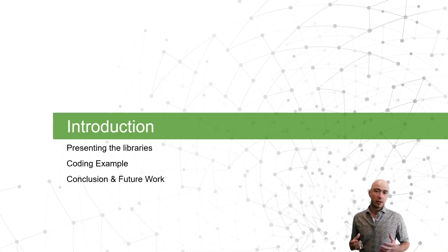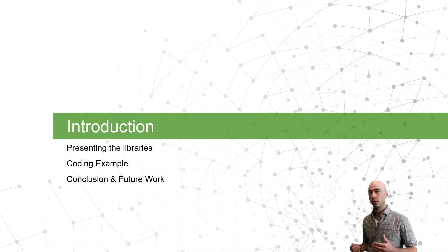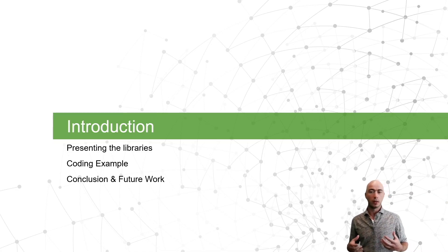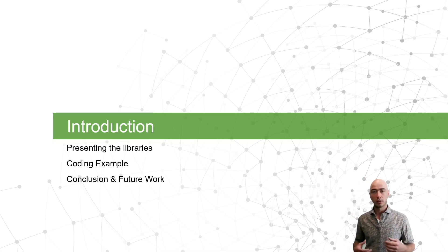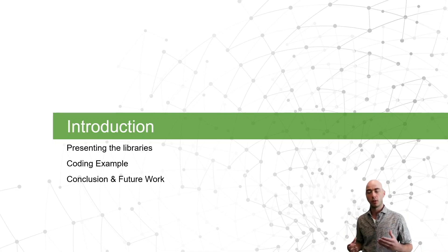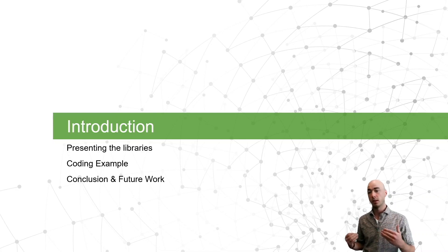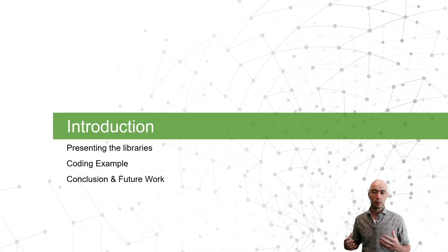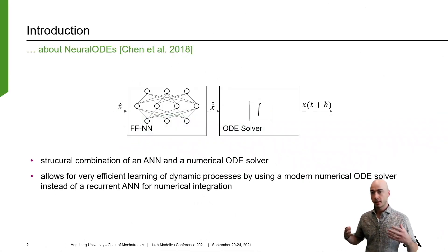I will start by giving a very short introduction on neural ODEs, their extension to neural FMUs, and the used tools and standards of this contribution. Then I will introduce you to the libraries fmi.jl and fmiflux.jl, the core of our work here, followed by two small coding examples. The first is on how to simulate an FMU and the second on how to set up and train a neural FMU. I will close the presentation with a short conclusion and notes on future work. So let's get started.